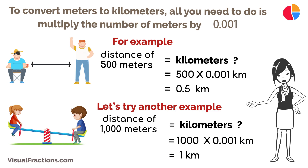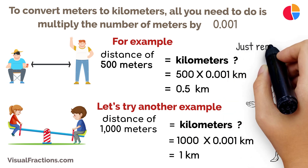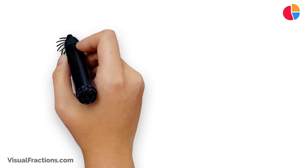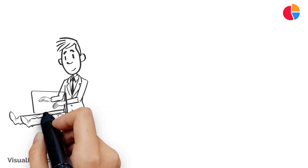It's really that easy. Just remember, 1 meter equals 0.001 kilometers. With this knowledge, you can effortlessly convert between meters and kilometers, ensuring you have the right measurements for any situation.